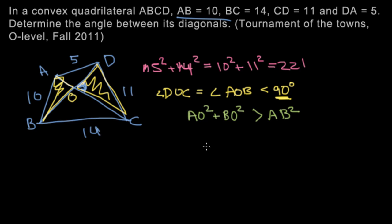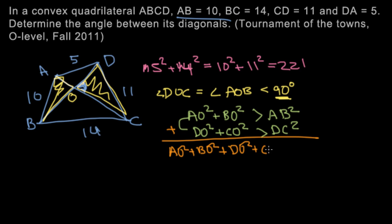Also looking at triangle DOC, we can say that DO squared plus CO squared is greater than DC squared. Okay, so we have these two, now let's add them. When we add them, we get AO squared plus BO squared plus DO squared plus CO squared is greater than AB squared plus DC squared, which is 100 plus 121, which is 221.